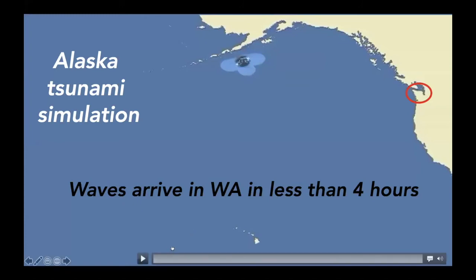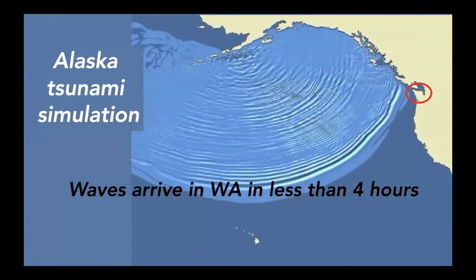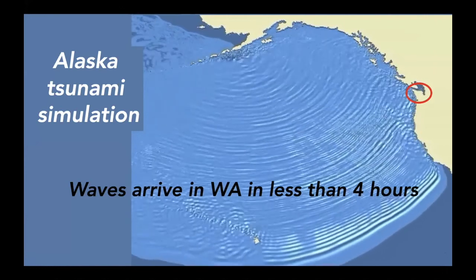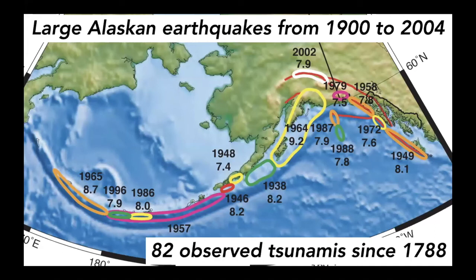We also know that we receive tsunamis from other places. This animation shows waves propagating from Alaska, reaching the coast of Washington in just under four hours. We need to be very concerned about these types of tsunamis as well because they happen so frequently. This map shows the last hundred years or so of large Alaskan earthquakes, with areas of rupture, magnitude, and the year each earthquake occurred. Since the year 1788, there have been 82 observed tsunamis in Alaska, and there are probably others that weren't observed or recorded.